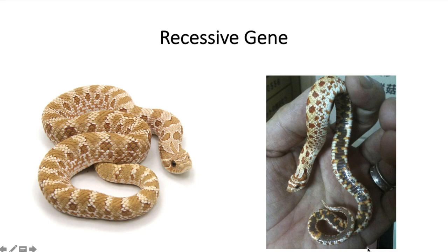All those are recessive genes, so that means in order for this snake to visually produce this color, it has to have a copy of the gene from the mom and a copy of the gene from the dad. Let's get started with some of the combinations you can see with the toffee gene.